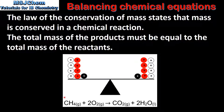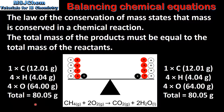Here we have an example with the reaction of methane and oxygen to produce carbon dioxide and water. The first point to note is that we have the same number of atoms in the reactants as we do in the products. If we add up the mass of the reactants and the products we can see we get the same value for both. This shows us that mass is conserved in a chemical reaction.